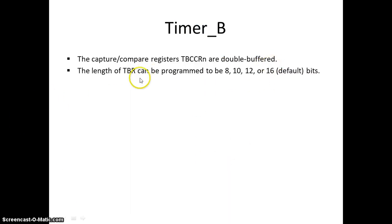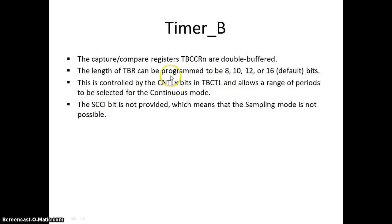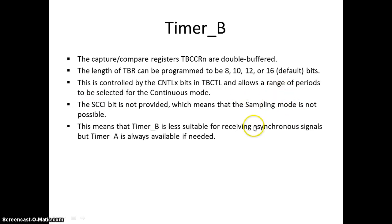The length of TBR can be programmed to 8, 10, 12, or 16 bits by default, controlled by the CNTLX bit. The range selected is used for continuous mode. The SCCI bit is not provided in Timer B, which means that sampling mode is not possible. Please go through the previous lecture to understand how sampling mode works.